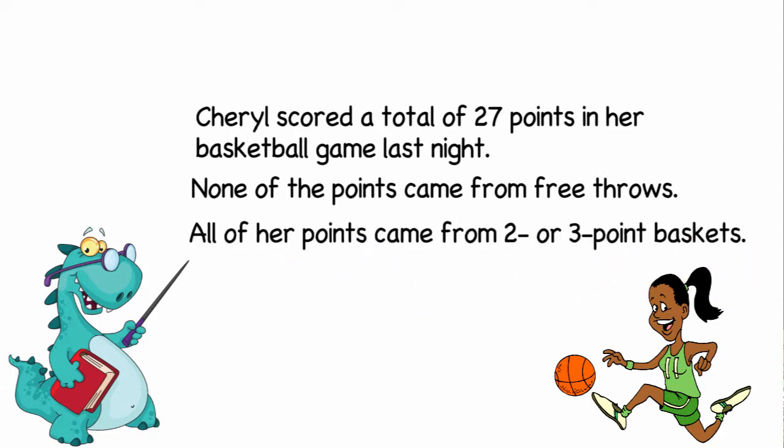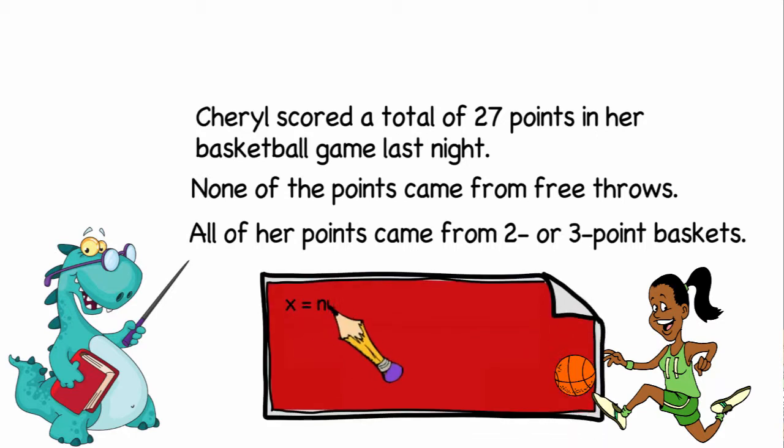We're going to write an equation in standard form to help us describe all the different possible combinations of two-point shots and three-point shots that Cheryl may have made. So there are two unknowns. The first unknown is how many two-point baskets she's made. We'll let x represent the number of two-point baskets, and we'll let y represent the number of three-point baskets.